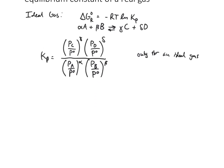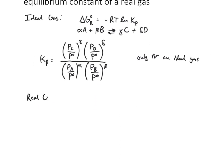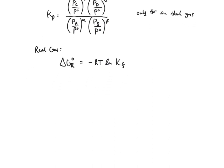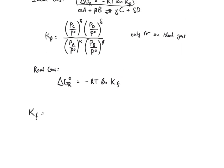So what do we have to do for a real gas? This equation is not going to apply to a real gas. Instead, our ΔG° is going to equal −RT ln K_F, a new type of equilibrium constant. K_F is going to follow a fairly similar pattern, but we're going to replace P with F everywhere we see it.